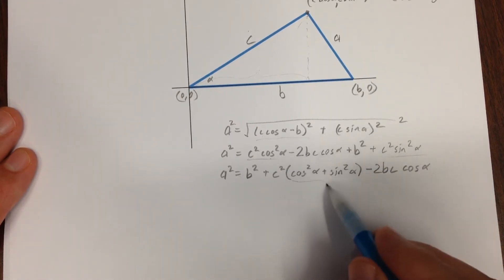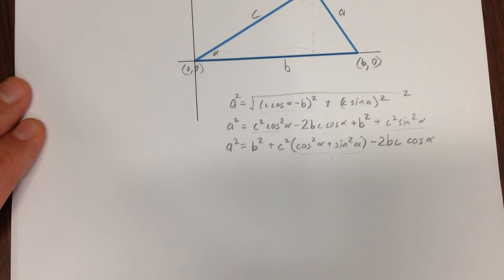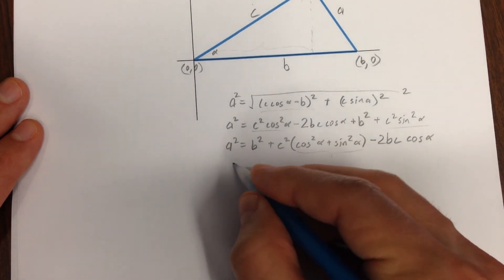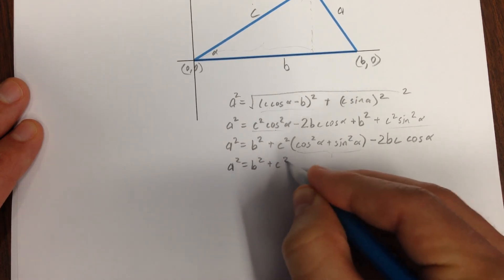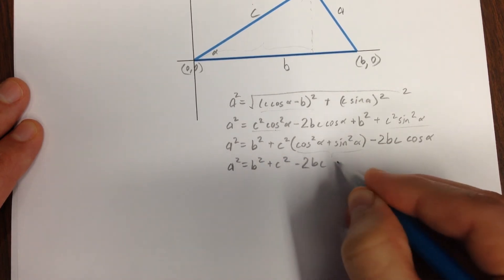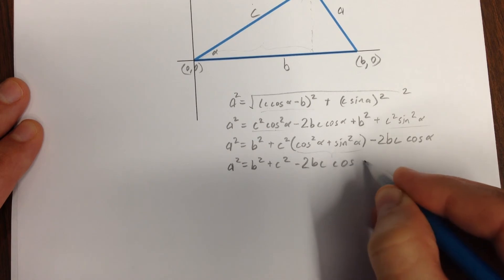Now this should set off warning bells in your head. Sine squared plus cosine squared is 1, so what do I have? I have a squared equals b squared plus c squared minus 2BC cosine alpha.